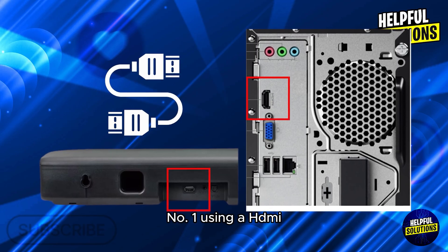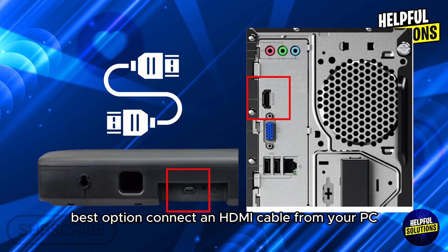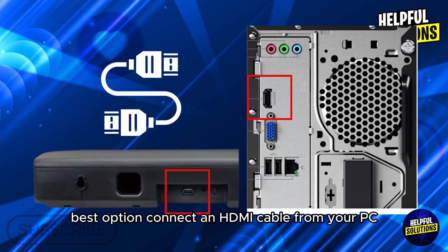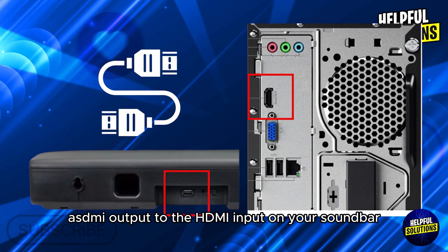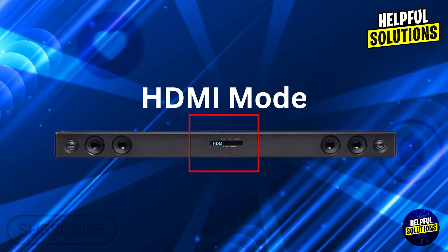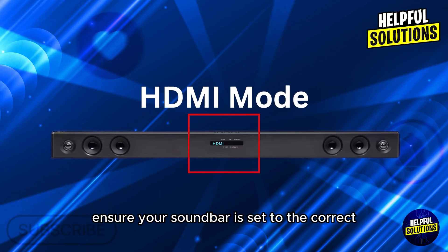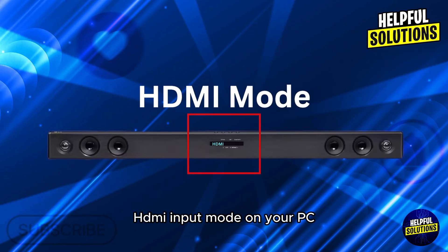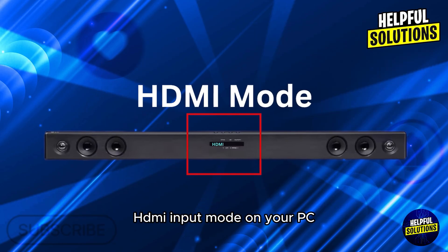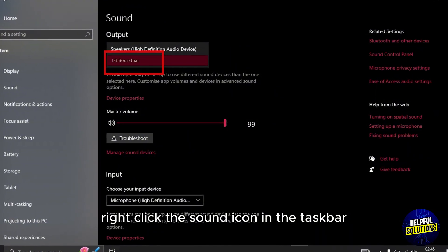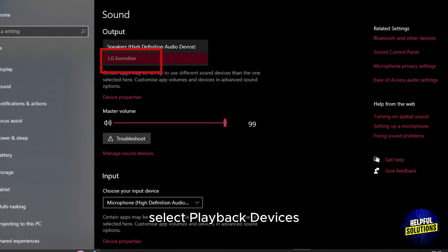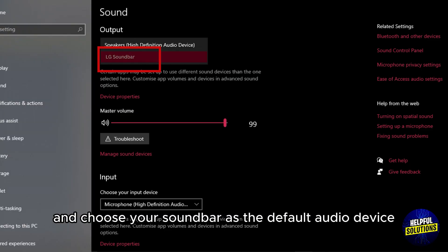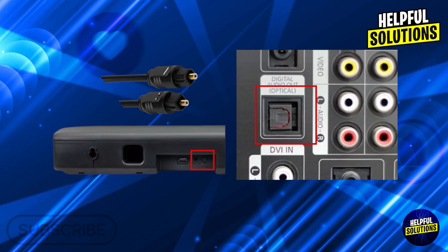Number 1: Using HDMI — best option. Connect an HDMI cable from your PC's HDMI output to the HDMI input on your soundbar. Ensure your soundbar is set to the correct HDMI input mode. On your PC, right-click the sound icon in the taskbar, select Playback Devices, and choose your soundbar as the default audio device.